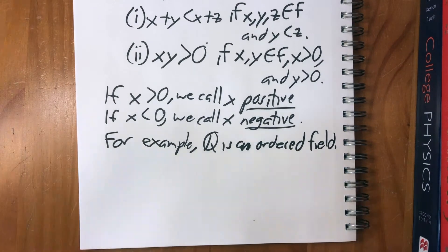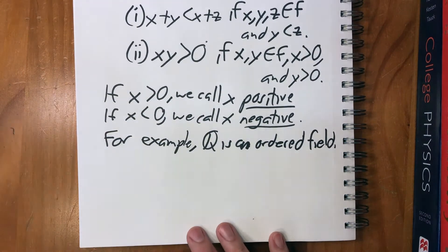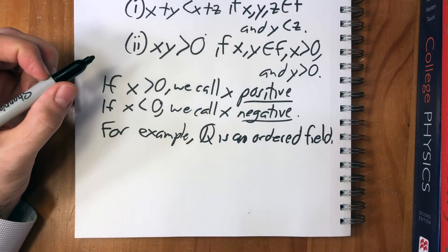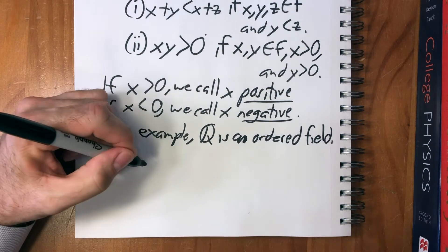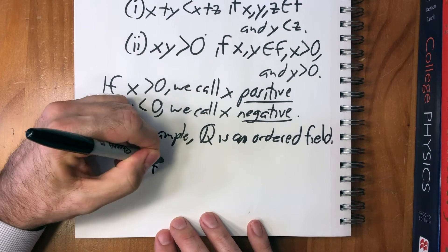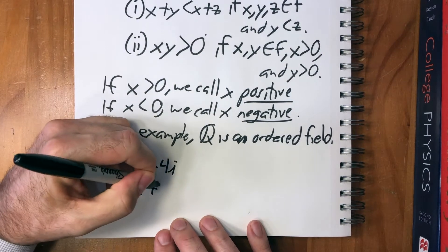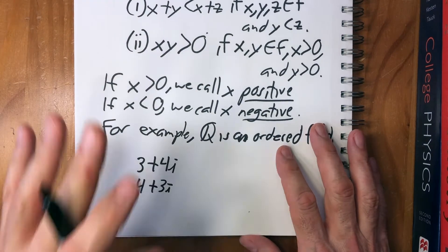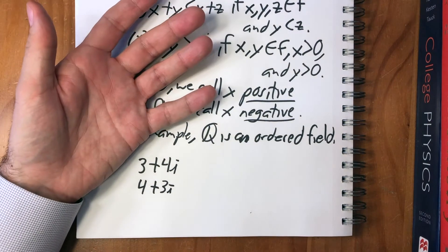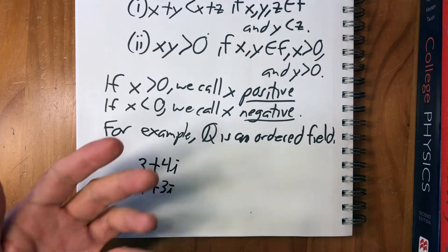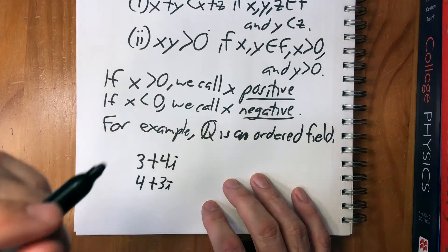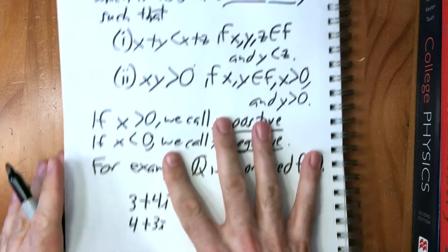And something that you may or may not know and something that we're going to get to in several weeks from now when we start looking at complex numbers is that although real numbers are an ordered field, complex numbers are not an ordered field. There's no way to put an order on complex numbers. If you have 3 plus 4i and 4 plus 3i, which one of those is bigger than the other? You can't do it. So it's interesting that in order to make complex numbers, we have to give up the order on the field. It's still a field, it still has the least upper bound property, but it doesn't have an order. But that's an aside. We'll get to that later.